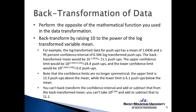One thing to notice is that the confidence limits are no longer symmetrical — we don't have 0.344 above and below the mean. The upper limit is 13.3 push-ups above the mean, and the lower limit is only 6.1 push-ups below the mean. This reflects the fact that we had originally skewed data. Importantly, when back transforming the confidence interval, we can't just add or subtract the log transformed confidence interval from the back transformed mean — in other words, we can't take 10 to the 0.344 power and then add or subtract that to the 11.1 back transformed mean.